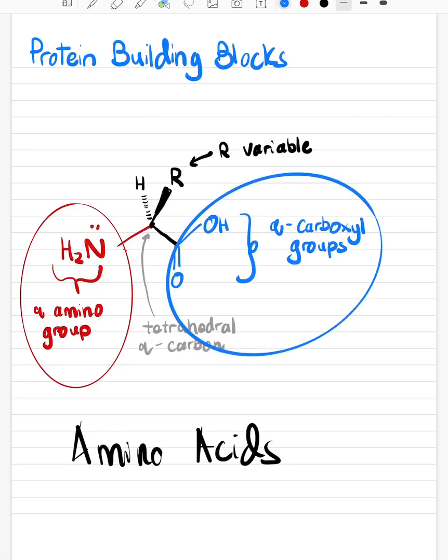We know that there are 20 different amino acids, and the reason I'm telling you this is you're probably thinking: what makes an amino acid different from another amino acid? The answer to that question is the R variable, also called a side chain. The R variable will distinguish the amino acid from one another.